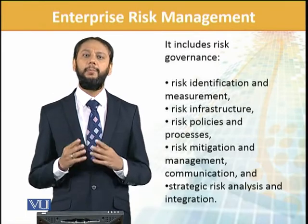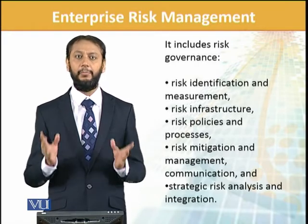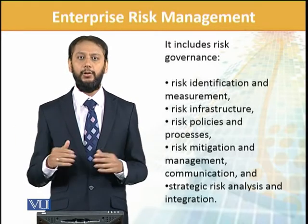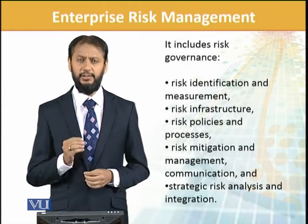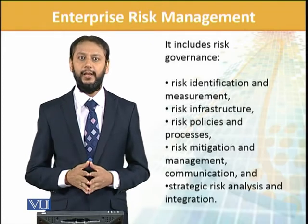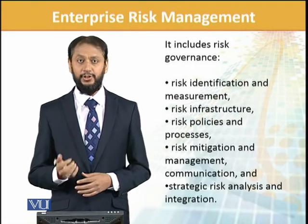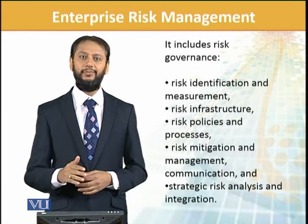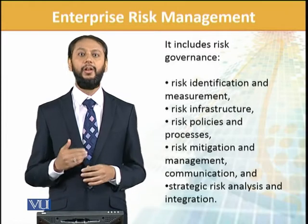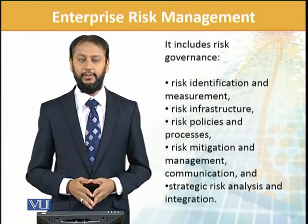First, we need to identify and measure which risks are applicable to us and can impact us. Then comes risk infrastructure — what will be the overall structure and pool through which we will route these. Risk policies and procedures define our strategy and how we deal with risks. Proper rules and guidelines should be there. For risk mitigation and management, once we have identified the risks, we need to decide how to mitigate, reduce, manage, transfer, or even accept some of them — all of this has to be part of risk governance.